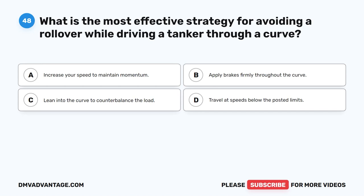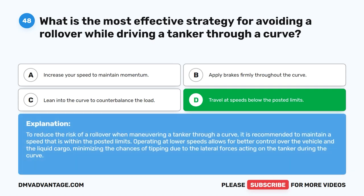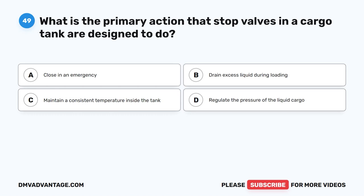Question 48. What is the most effective strategy for avoiding a rollover while driving a tanker through a curve? A. Increase your speed to maintain momentum. B. Apply brakes firmly throughout the curve. C. Lean into the curve to counterbalance the load. D. Travel at speeds below the posted limits. The correct answer is D. Travel at speeds below the posted limits. To reduce the risk of a rollover when maneuvering a tanker through a curve, it is recommended to maintain a speed within the posted limits. Operating at lower speeds allows for better control over the vehicle and the liquid cargo, minimizing the chances of tipping due to the lateral forces acting on the tanker during the curve.